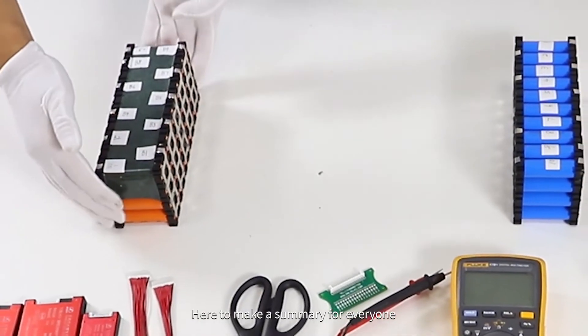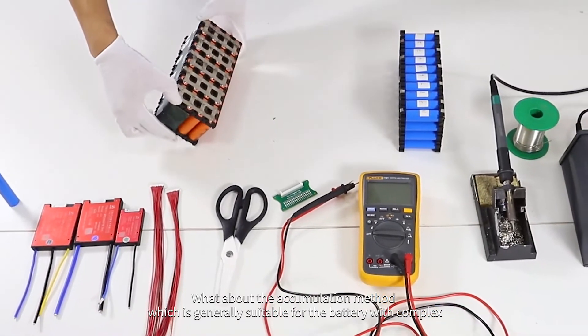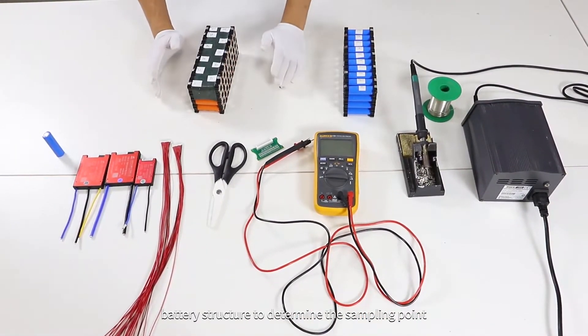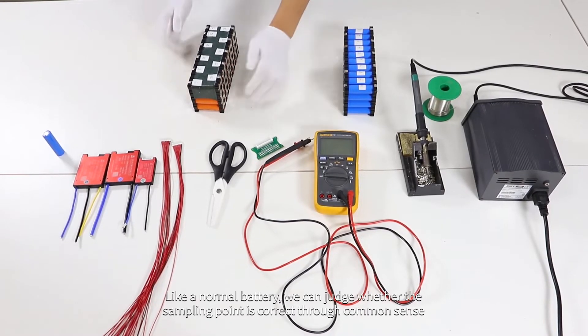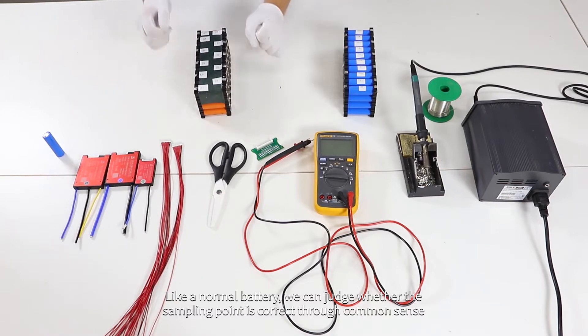Here to make a summary for everyone. The accumulation method is generally suitable for batteries with complex battery structure to determine the sampling point. Like a normal battery, we can judge whether the sampling point is correct through common sense.